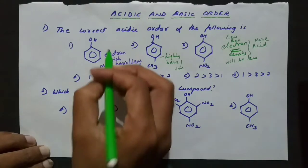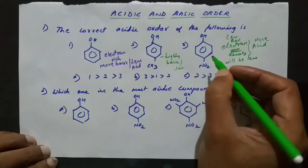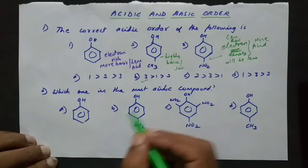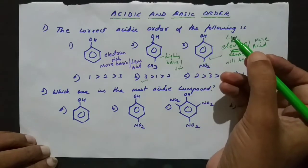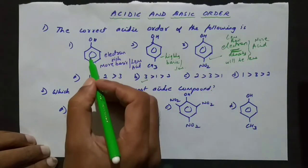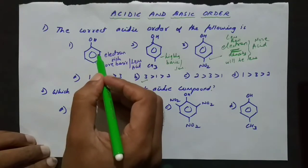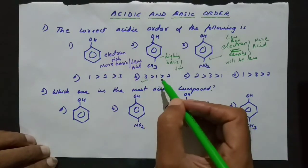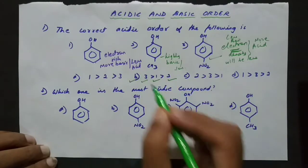So the correct acidic order: compound 3 (with NO2) will be the strongest acid because the electron density is very low and hydrogen can move very easily, followed by compound 1 (with OH only), and compound 2 (with OH and methyl group) will be the least acidic. So the correct option will be B.